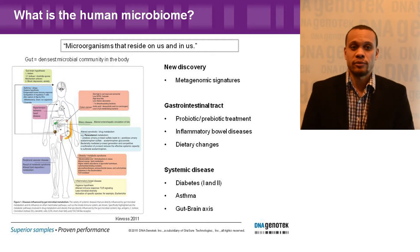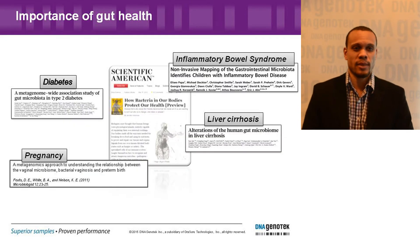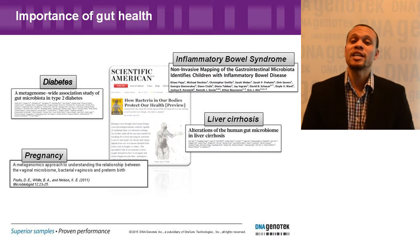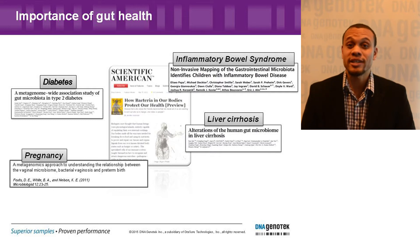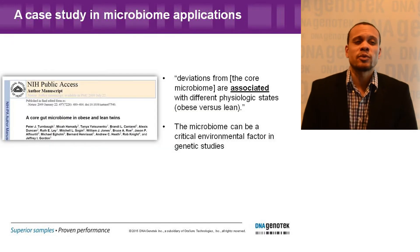There have been some new discoveries using metagenomic signatures of these bugs, and these discoveries have been in GI and systemic diseases. There is also wide applicability beyond GI disorders in publications characterizing its role in pregnancy, diabetes, liver disease, and general health and wellness. So the microbiome could also be a critical environmental factor in genetic studies.